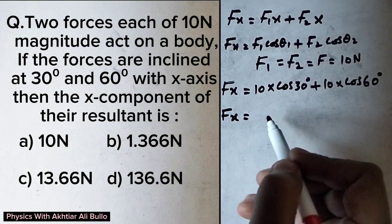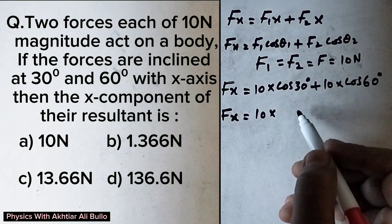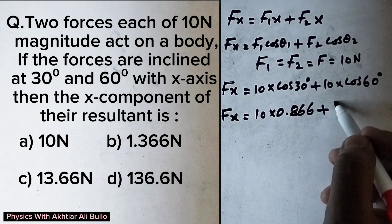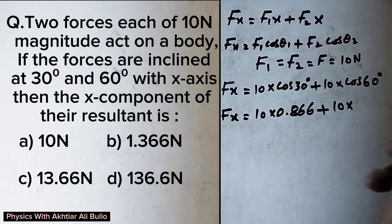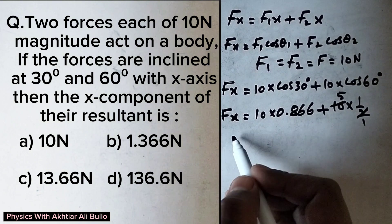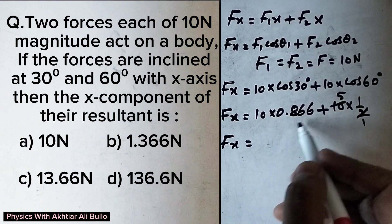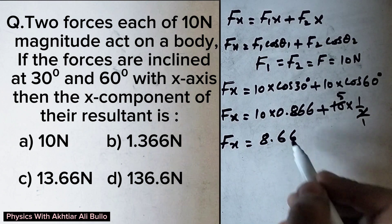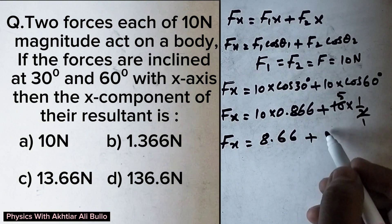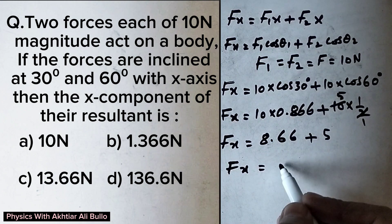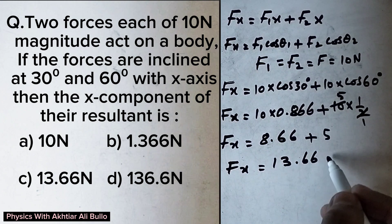The value of cos30° is 0.866, and the value of cos60° is 1/2, which gives 5. So the horizontal component will be 10N × 0.866, which is 8.66, plus 5. Therefore the horizontal component will be 8.66 + 5 = 13.66N.